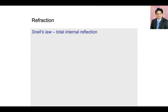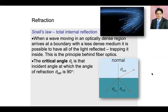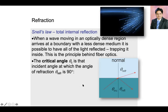Next we are going to talk about total internal reflection. We know that when light travels from a denser to a rarer medium, it bends away from the normal. If we increase the angle of incidence, the angle of refraction increases. If we keep increasing the angle of incidence, a stage will come when the angle of refraction will be 90 degrees. The angle of incidence for which the angle of refraction is 90 degrees is actually the critical angle.